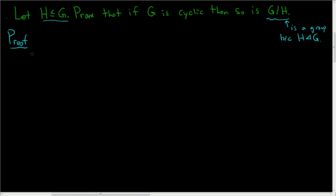All we have to do is show it is cyclic. Suppose G is cyclic with generator g. We can write G = ⟨g⟩. The claim is that the quotient group is also cyclic.